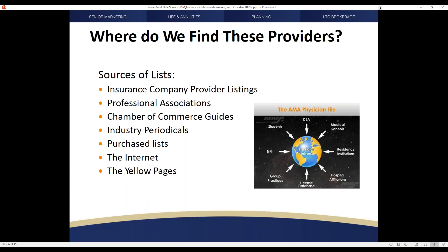Many people will go the purchase list route because it may give you additional ways of contacting that individual — some of these lists may include direct phone numbers or email contact listings. And then of course there's the internet, where Google or Bing or whatever search function you choose will enable you to pull a listing of professionals by type in a particular area. And if you're old fashioned, there is of course the yellow pages available to you as well.